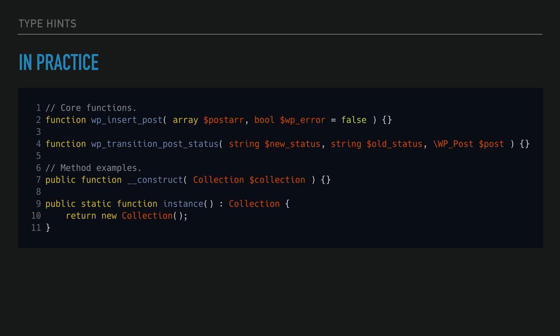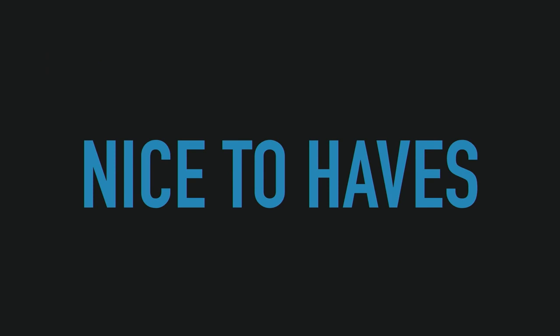I've converted two core function signatures to add type hinting — it was quite difficult to find two core functions that only accept parameters of one type. WP insert post: we added the array type hint and the boolean. WP transition post status: we added string, string, and WP post. For class constructor examples, we added a collection type for a collection parameter. And the last one is a return type declaration — declaring that this is the return type of this method. A bad habit festered in the WordPress PHP community is multiple return types from different methods: if it failed, return false; if it didn't, return something completely different. Modern best practice would be to try to return the same type from everything.